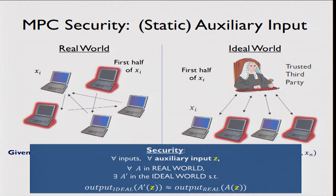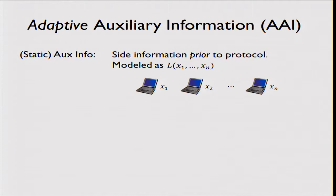This is the standard standalone MPC security definition, now quantified also over possible auxiliary information. The adversaries in both worlds receive the auxiliary information in addition to everything else. I want to refer to this as static auxiliary information: it handles anything that could have been learned before the protocol execution, but once the protocol starts, it's assumed no side information can be revealed.